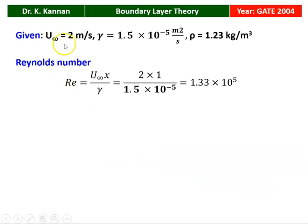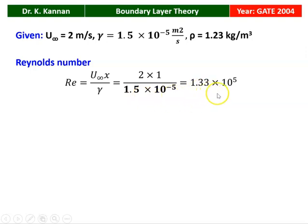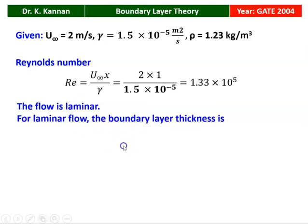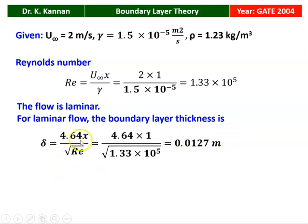Given: free stream velocity U-infinity equals 2 m/s, kinematic viscosity nu equals 1.5 × 10^-5 m²/s, density rho equals 1.23 kg/m³. The Reynolds number Re equals U-infinity × x divided by nu, which is 2 × 1 divided by 1.5 × 10^-5, equal to 1.33 × 10^5. Since Re is less than 5 × 10^5, the flow is laminar. The boundary layer thickness delta equals 4.64 × 1 divided by the square root of 1.33 × 10^5, which equals 0.0127 meter.